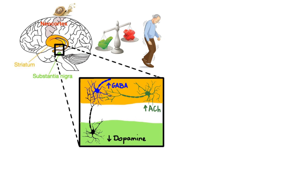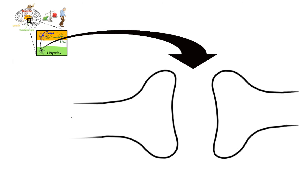To get a better understanding of the pharmacology of anti-Parkinson agents, we need to take a closer look at the dopamine-producing neuron. Inside this dopaminergic neuron, dopamine is synthesized in a two-step process starting with the amino acid tyrosine. First, with the help of the enzyme tyrosine hydroxylase, tyrosine gets converted to L-DOPA, also known as levodopa. Then the L-DOPA is quickly decarboxylated by another enzyme called aromatic L-amino acid decarboxylase to the neurotransmitter dopamine.